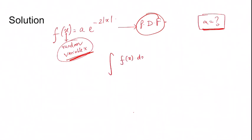So since f(x) is probability density function, integration f(x) dx from minus infinity to infinity is 1. f(x) is a e^(-2|x|) from minus infinity to infinity equals 1. Since e^(-2|x|) is even, a into e^(-2|x|) is also even.